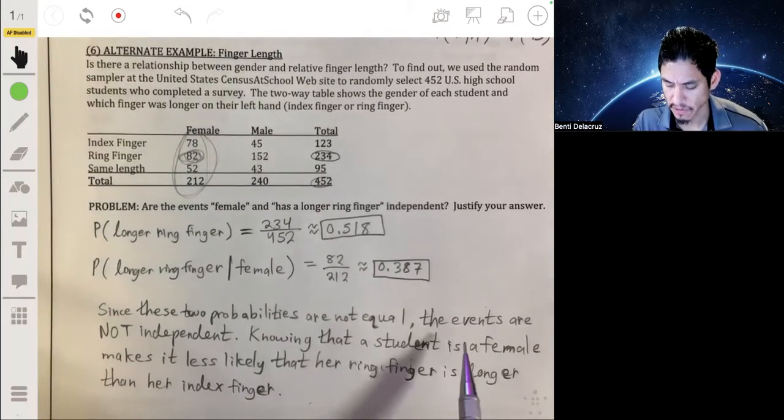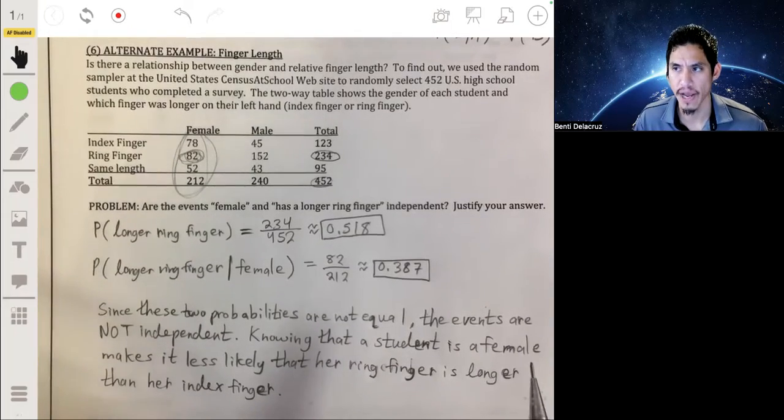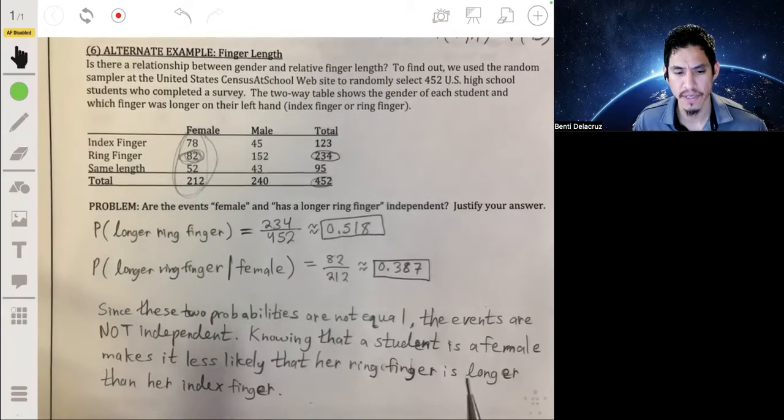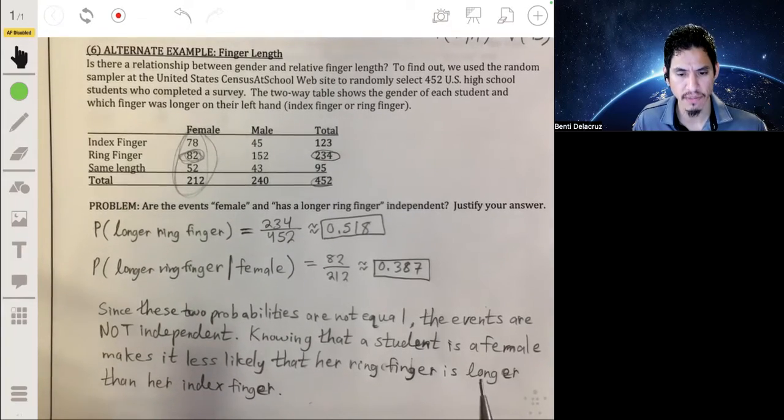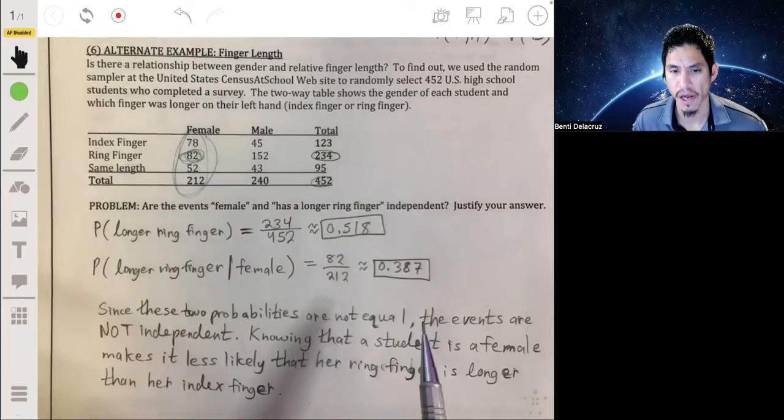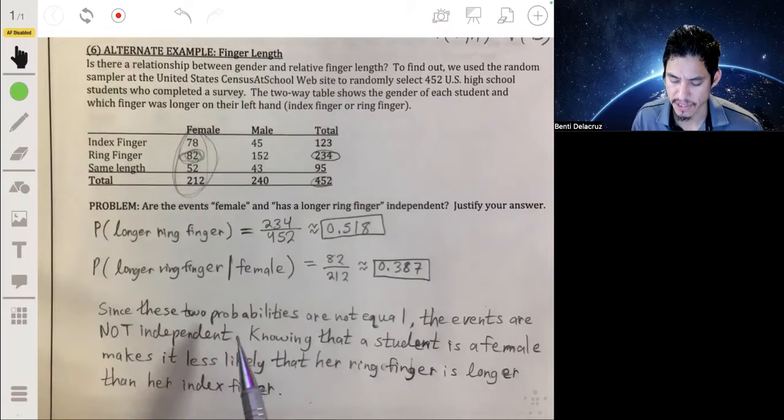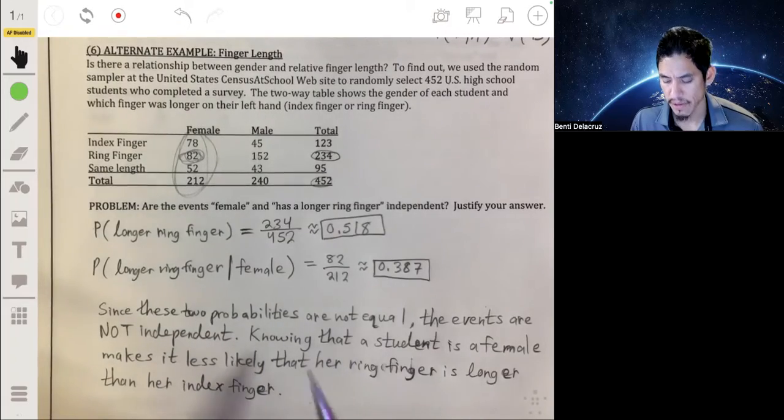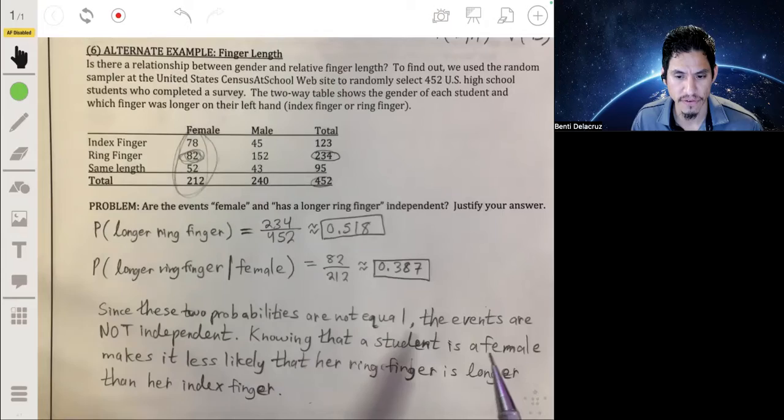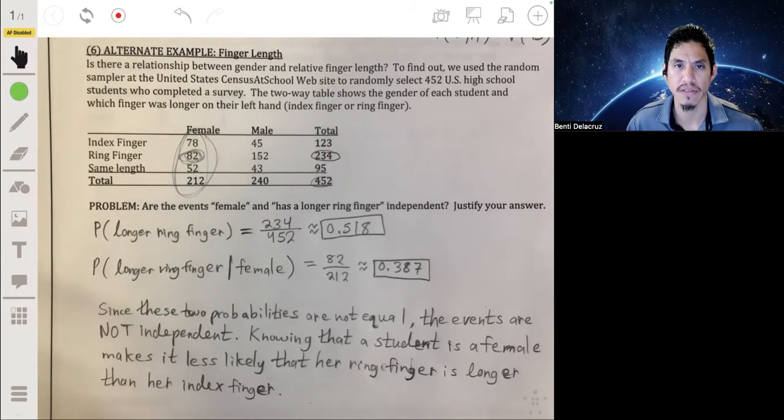All right, so here's the answer all written out. Remember, in statistics you're going to have to do a lot of writing, at least more than you're used to in normal math classes. So especially on your AP exam, just make sure you always explain your answer in a sense where the reader can tell that you know what you're doing. So we say that since these two probabilities are not equal, the events are not independent because if you know that someone is female, it makes it less likely that her ring finger is going to be longer than her index finger.